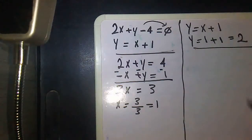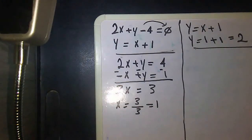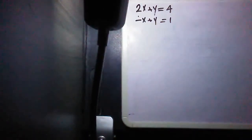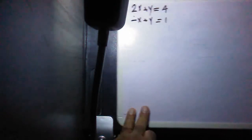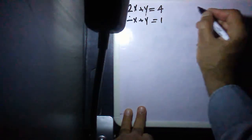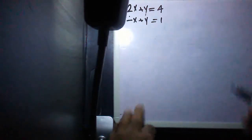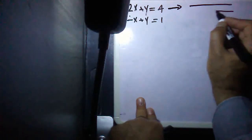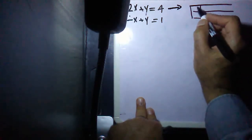Now I have two equations and I want to draw them. The meaning of drawing them means I will make points, then I will draw these points to make the lines. Before drawing, we have to make a table — like a schedule — for x values and for y values. Let's go for equation number one and see the values of x and y.